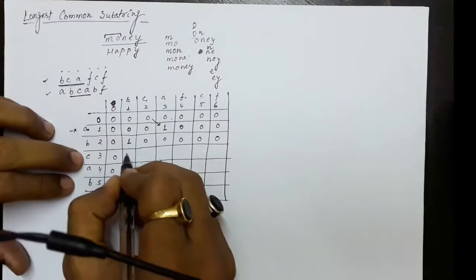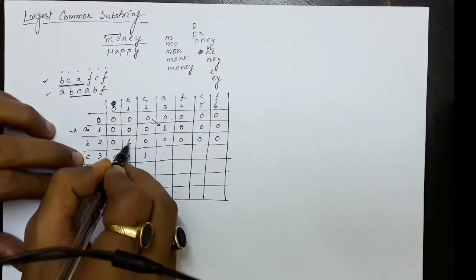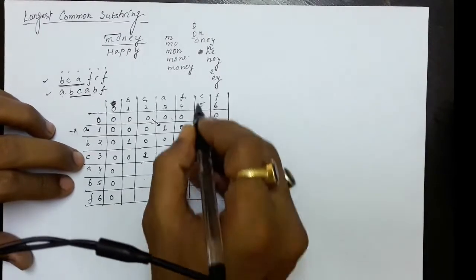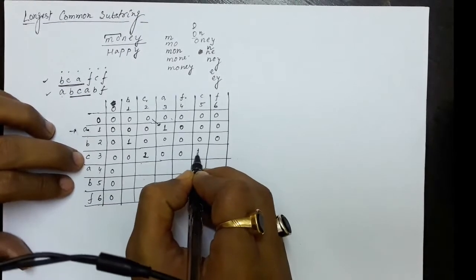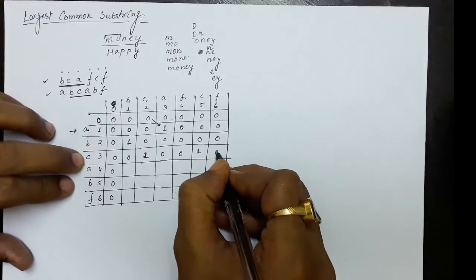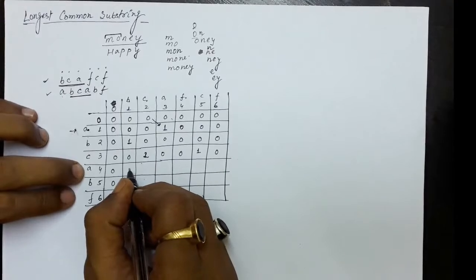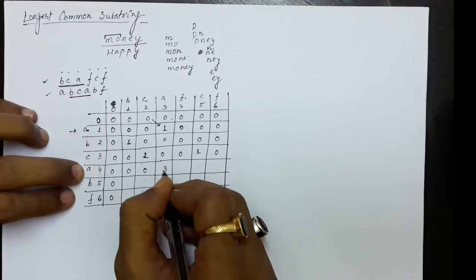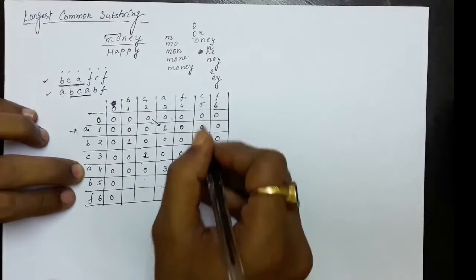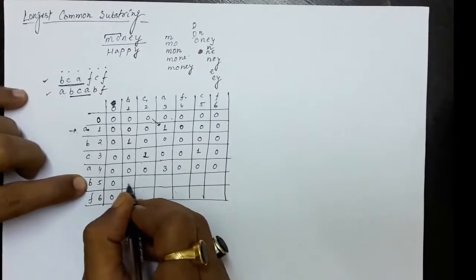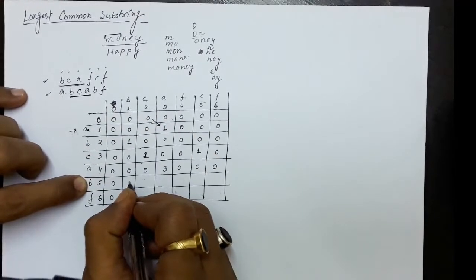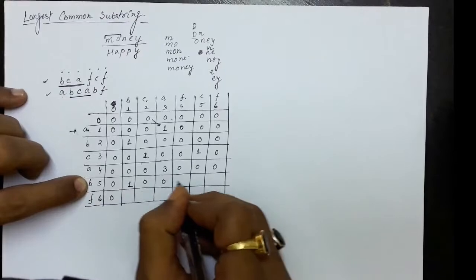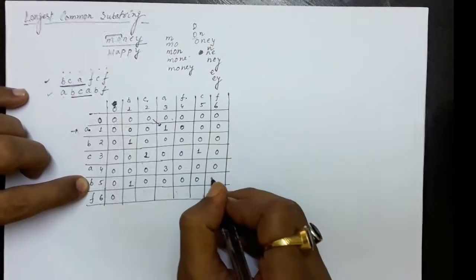C and B — no match, 0. C and C — match; diagonal value plus 1. C and A — no match, 0. C and F — no match, 0. C and C — match; diagonal value 0 plus 1 equals 1. C and F — no match, 0. A and B — no match, 0. A and C — no match, 0. A and A — match; diagonal value is 2, plus 1 gives 3. A and F — no match, 0. A and C — no match, 0. A and F — no match, 0. Then B and B — match; diagonal value 0 plus 1. B and C, B and A, B and F, B and C, B and F — all no match, 0.